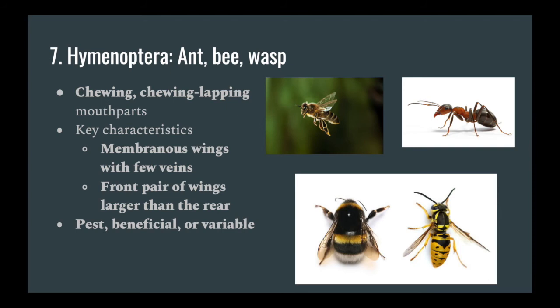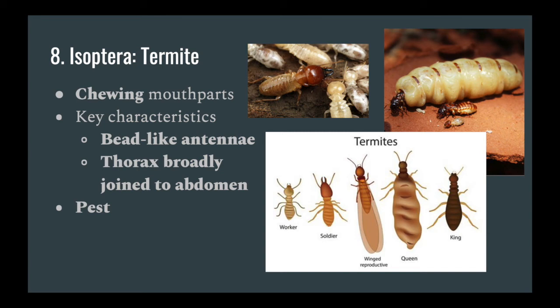Up next is Isoptera, or termites. It's very important to not confuse termites with ants, although to the untrained eye they can appear to be very similar. Isoptera are always going to have beaded antennae and they will not be elbowed, so they will not appear to be in an L or squared type shape — each individual segment will appear to be a very small ball. The thorax and abdomen are also going to be very broadly joined, whereas in Hymenoptera they have a very tight, what's referred to as a wasp waist.